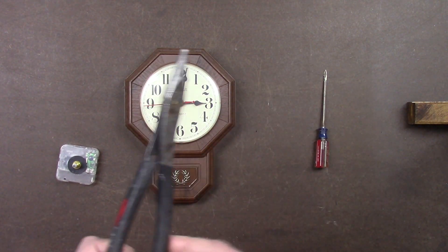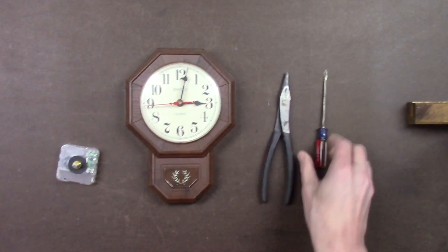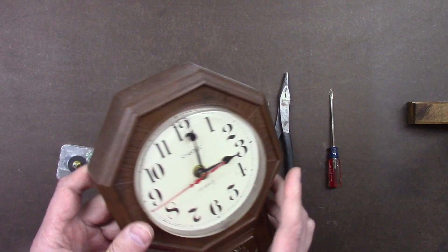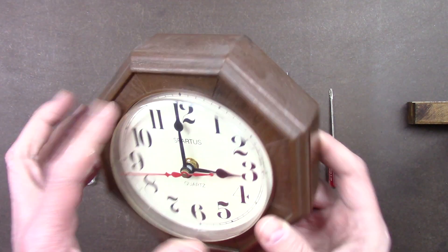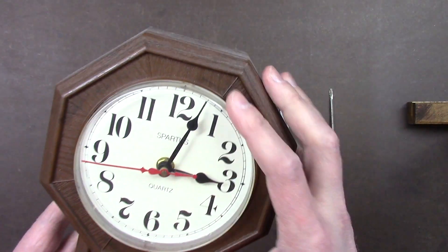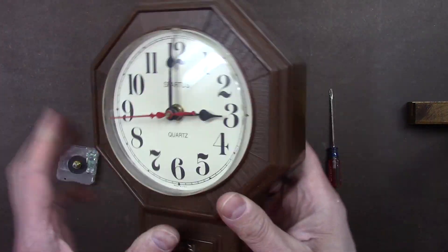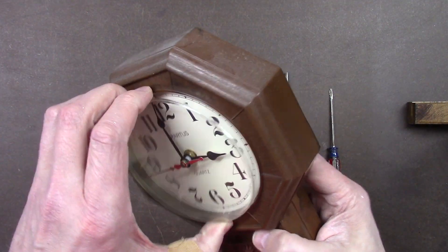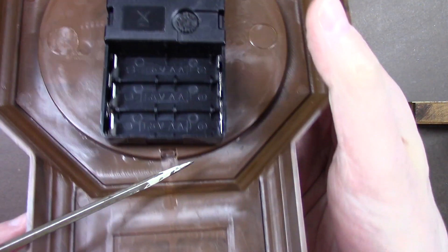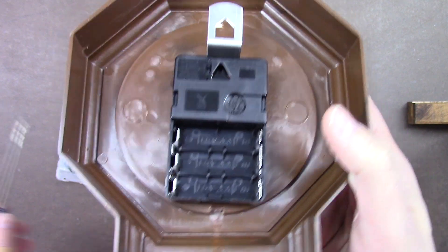You'll need a pair of needle nose pliers, a little flat head screwdriver. The thing is, these new clocks are pretty much made all the same. It's a plastic lens here that you pull off. If you look in the back, there's usually plastic tabs that hold the plastic lens in place.